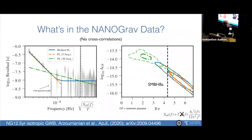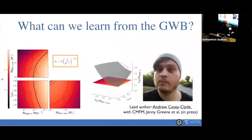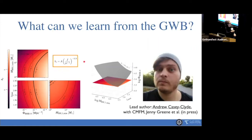So, why do you care? The amplitude of the gravitational wave background can actually tell you about the underlying supermassive black hole binary population. My student Andrew Casey-Clyde and I took this model of the gravitational wave background — with some amplitude reported at a reference frequency of one over a year — and we decomposed it into underlying parameters used to generate models of the gravitational wave background.